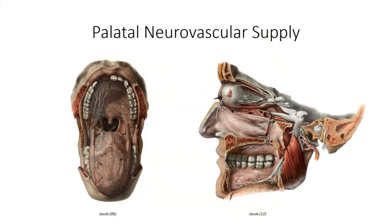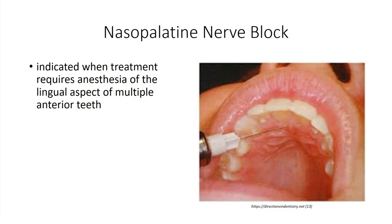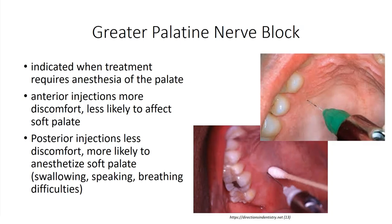The hard and soft palate are supplied by the greater and lesser palatine arteries and nerves, respectively, which course through the greater and lesser palatine foramina to run just deep to the thick palatal mucosa. The anterior aspect of the palate is supplied by the nasopalatine nerve, which passes through the incisive fossa — making it the target for nerve block during dental procedures involving the posterior surface of the incisors. Dental procedures related to the palate typically involve blocking of the greater palatine nerve, with anterior blocks associated with greater patient discomfort and posterior blocks running risk of affecting soft palate muscles, causing temporary complications in swallowing and speaking.